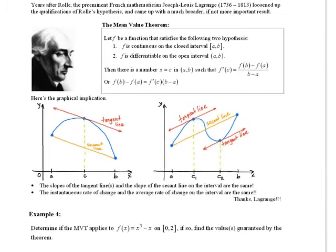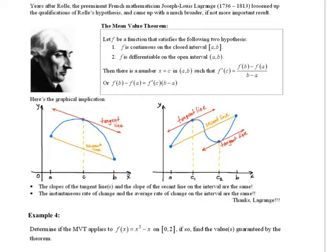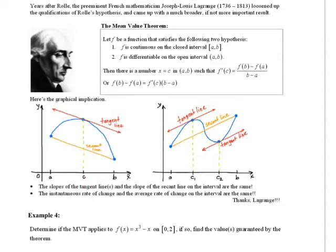First we're going to look at it graphically, and then we'll look at the text of it. The mean value theorem basically says that if you have a continuous function from a to b — continuous on the closed interval and differentiable on the open interval — then somewhere there will be a slope that is equal to the secant slope. We'll revisit how to find the secant slope, and prove that somewhere between a and b there exists a tangent line whose slope is equal to the secant slope. This is an existence theorem: it proves that it exists, it doesn't prove where it exists, and it doesn't prove how many there might be. In this case, we see that the secant line has two tangent lines that are parallel.